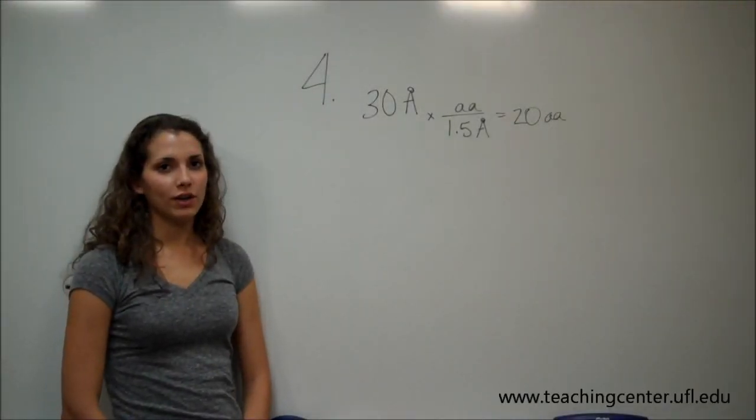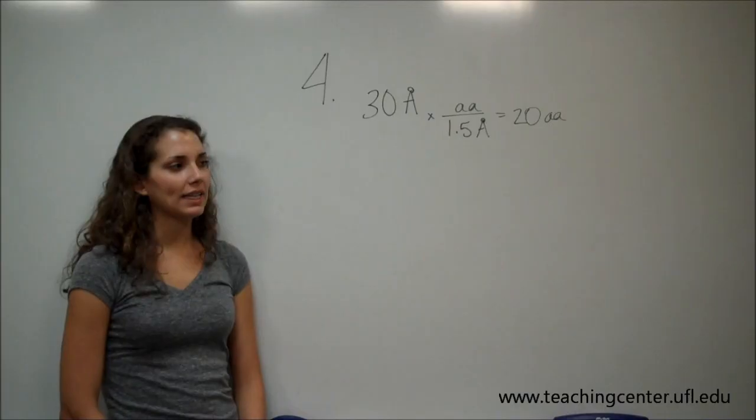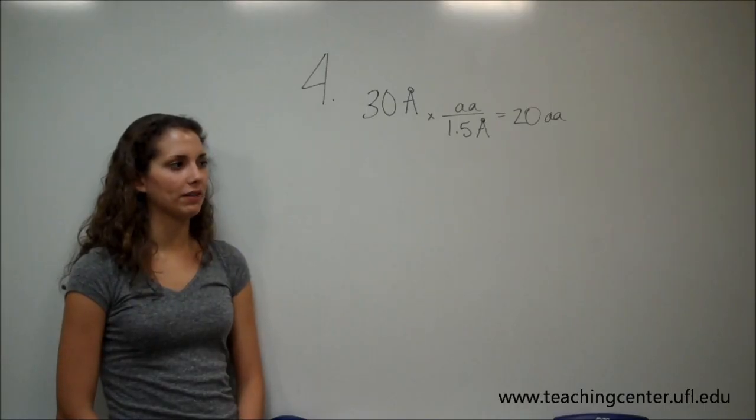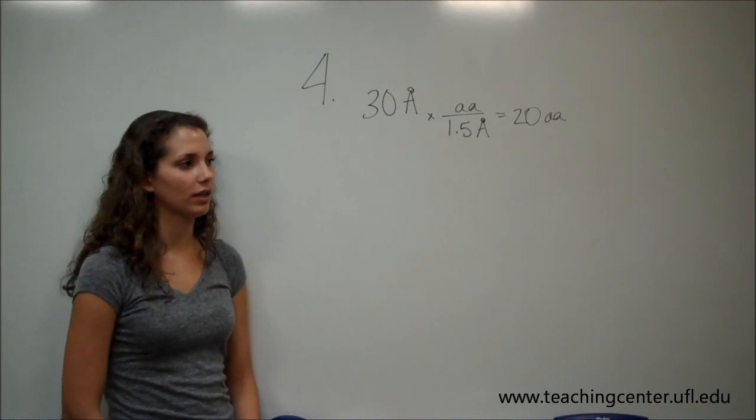So we're now on number four of Dr. Long's review questions for lectures 17 through 18. Number four is asking, how many amino acids longer do transmembrane helices need to be in a lipid raft membrane, assuming its hydrophobic thickness is six angstroms greater?